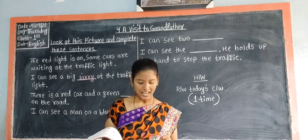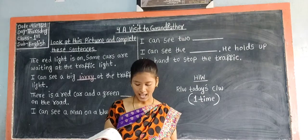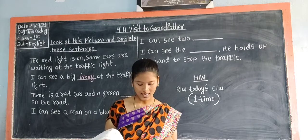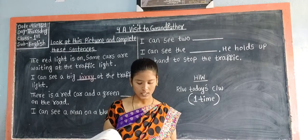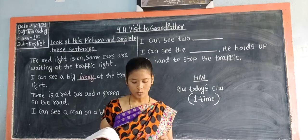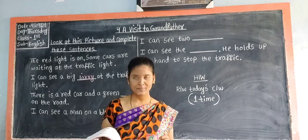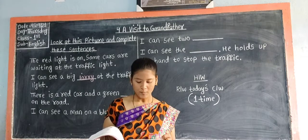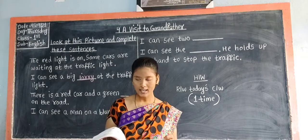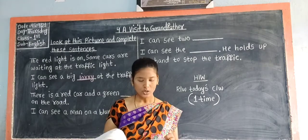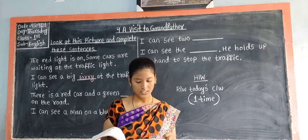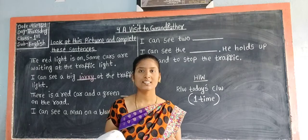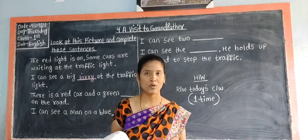Next sentence: 'I can see two ___.' What you can see in the picture children? Very good — a policeman. A policeman holds up his hand to stop the traffic. Okay children, now let us solve this exercise on the board.